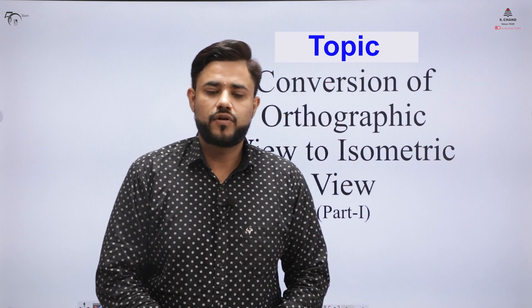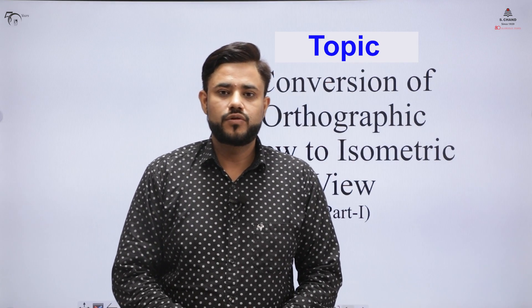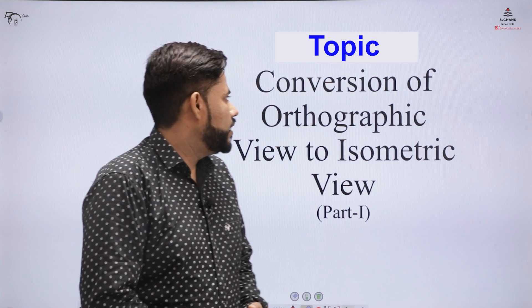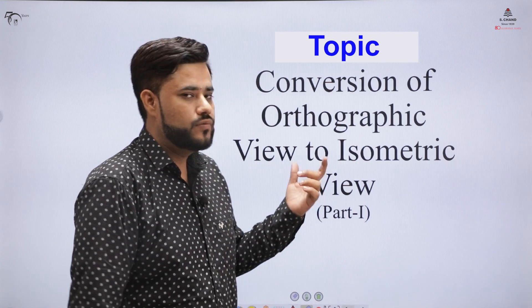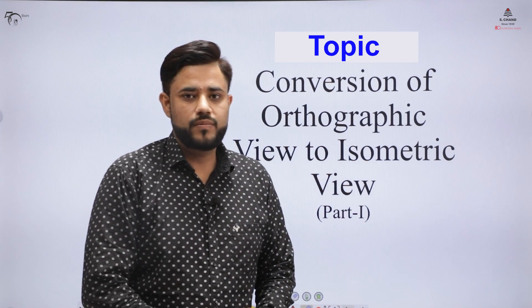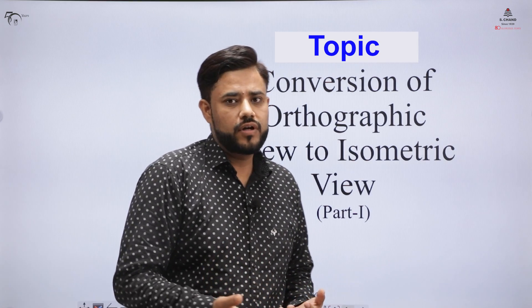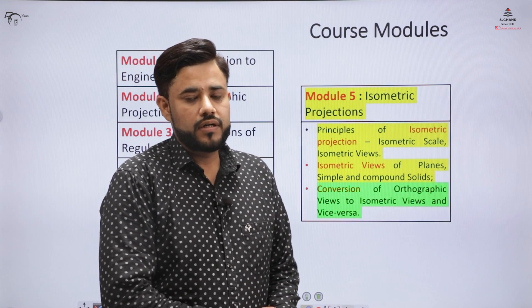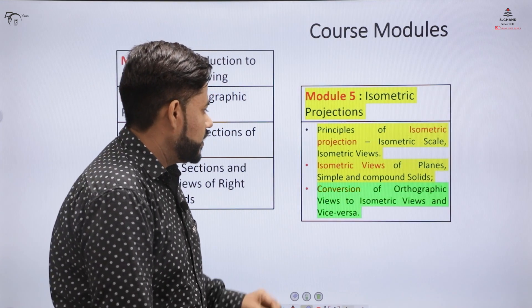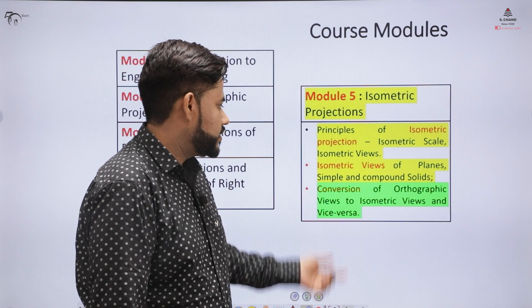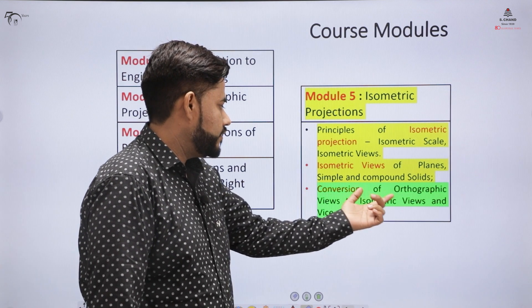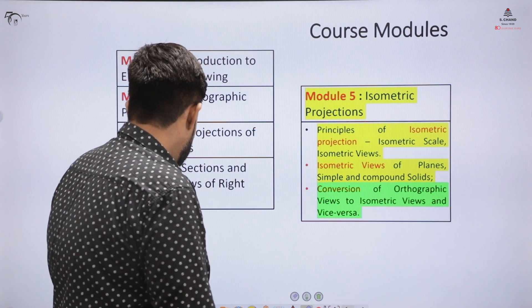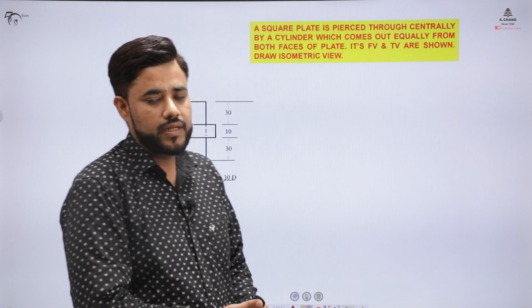This is lecture number 14, first part of the series of the course Engineering Graphics and Drawing. Here we will be learning the concept of how to convert orthographic projections into isometric view. We are covering module number 5 and this is the second last topic of the same, which is conversion of orthographic views into isometric views. We will understand this topic by considering an example.